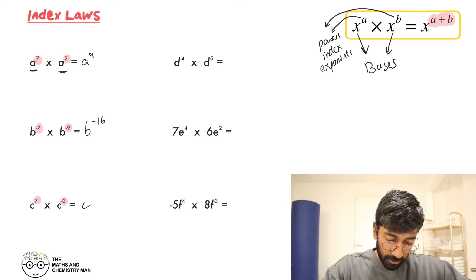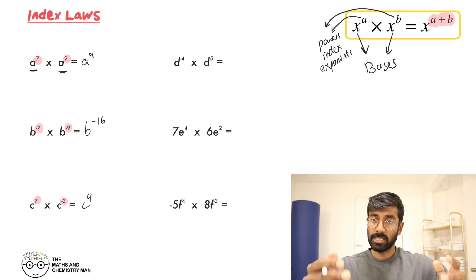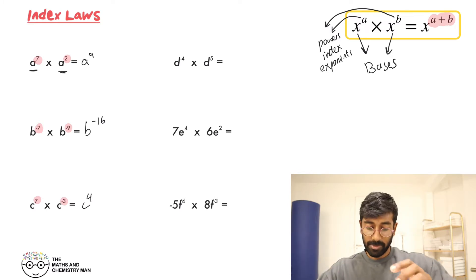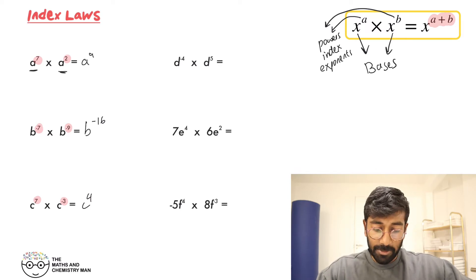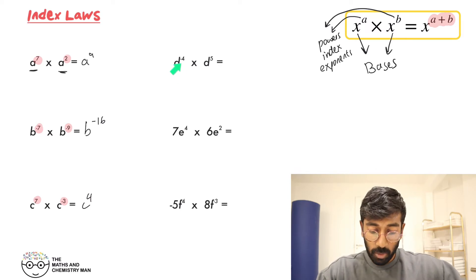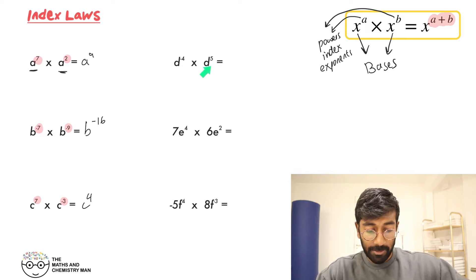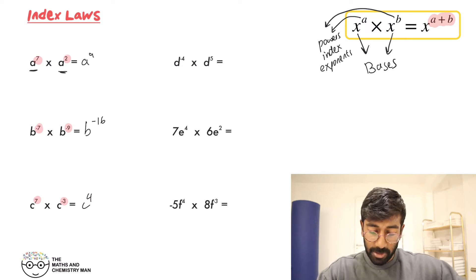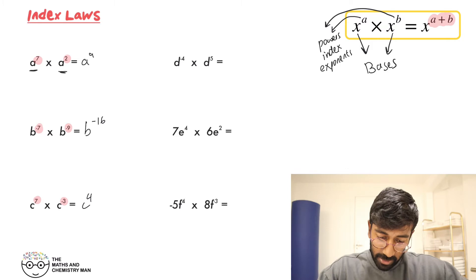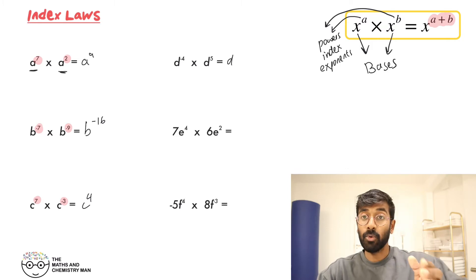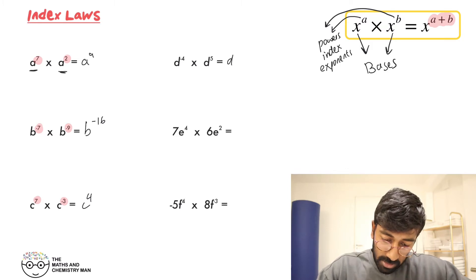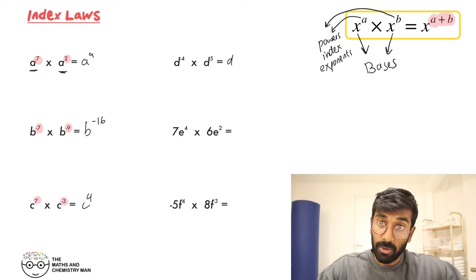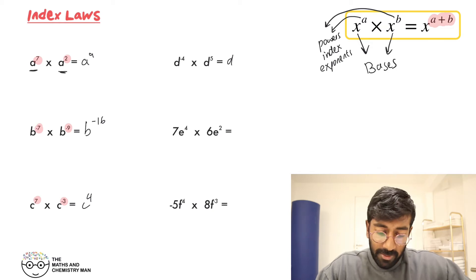The next one, we've got D to the power of minus 4 times D to the power of 5. Remember, adding those together: minus 4 plus 5 — that gives D to the power of 1, or we'll just leave it as D. You don't need to write the power of 1.